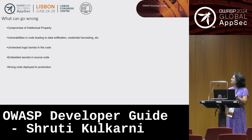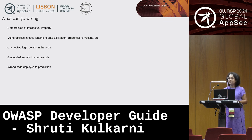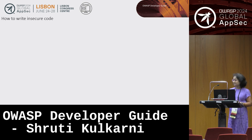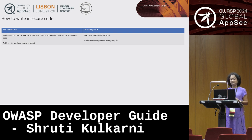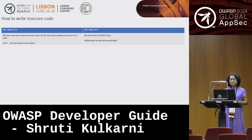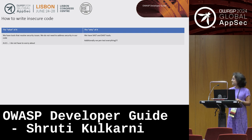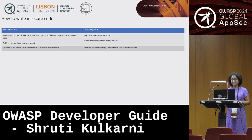We can avoid that by using secure coding guidelines. That's just one example of writing applications securely. There are other ways to write applications insecurely — for example, saying we don't have security issues because we have SAST and DAST tools, so we don't have to worry about anything. Additionally, we pentest everything, so we don't need secure coding guidelines or anything related to security.